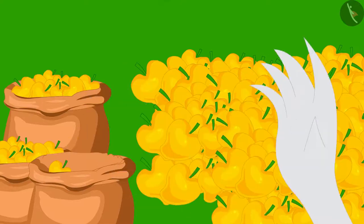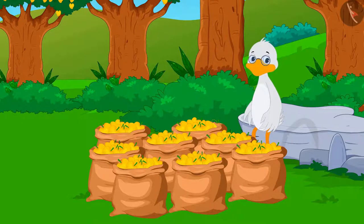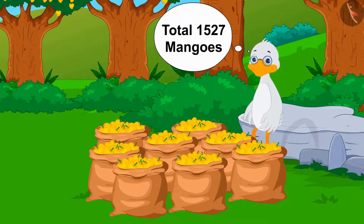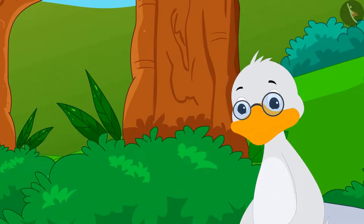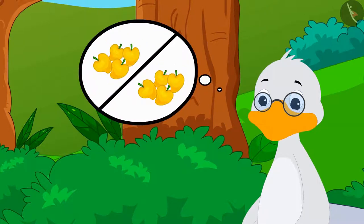When Uncle counted those mangoes, he came to know that he had a total of 1,527 mangoes. Uncle decided that he would form groups of four mangoes and distribute them among the villagers.